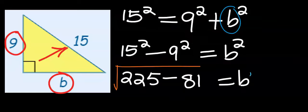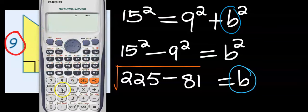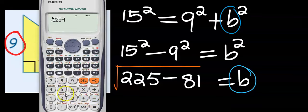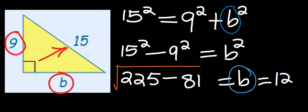Next, to isolate b, we are going to take the square root of the other side. Using our calculator: the square root of 15 squared is 225, and 9 squared is 81. So we are going to have the square root of 144, and the base b is equal to 12.